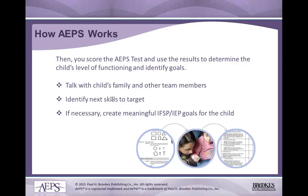Once you've observed the child and jotted down scores, you score the AAPS test and use those results to determine the child's level of functioning and help identify their goals. You'll identify goals by talking with the child's family and other team members. You identify the next skills to target, and if necessary, use that information to create a meaningful IFSP or IEP goal for the child moving forward.